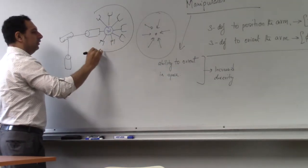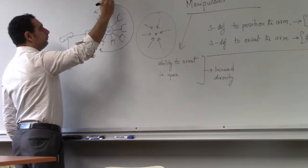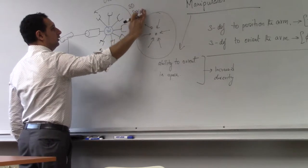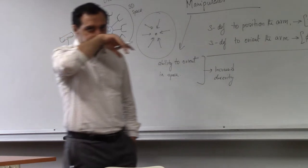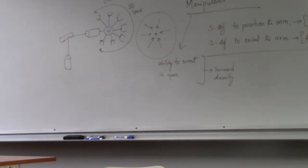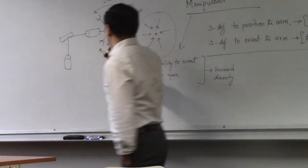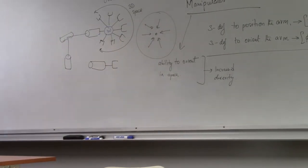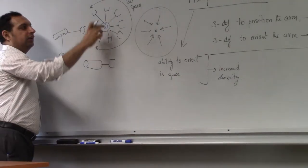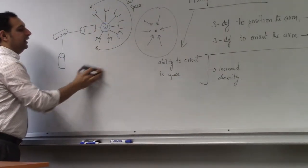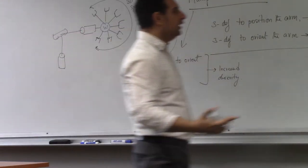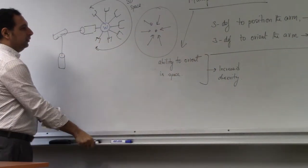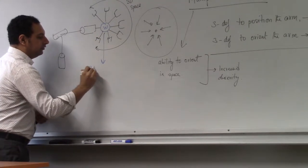Once you have the wrist, you can orient the end effector as you like. For example, from here you can rotate it like that, because the wrist will give you more degrees of freedom. This not only positions the arm, it also orients the arm — so these are all possible orientations in three-dimensional space. So now I'm not limited to just positioning the arm, but I'm able to move it around in space.